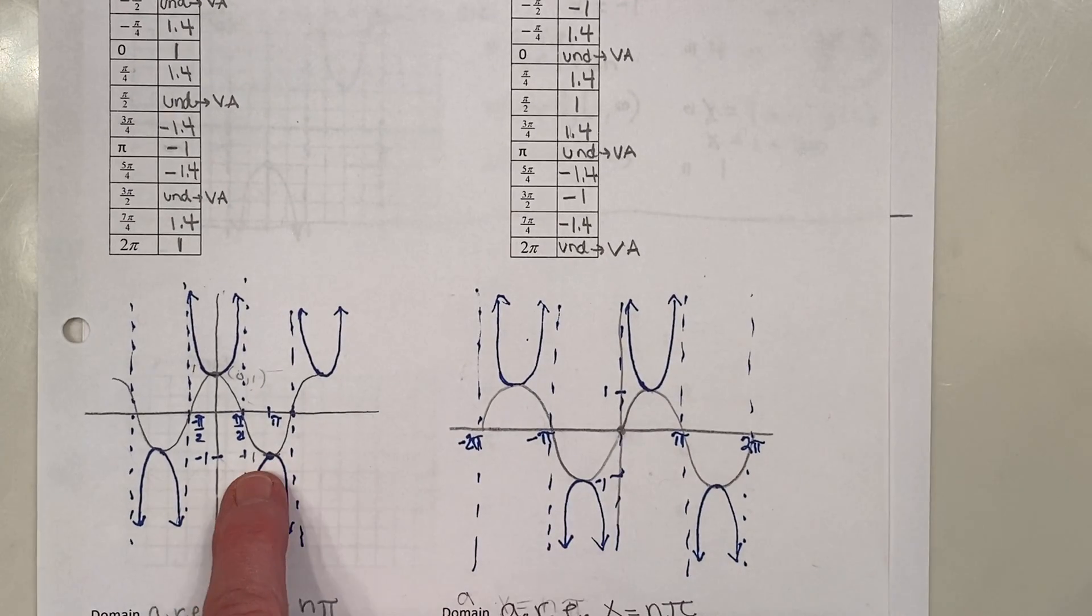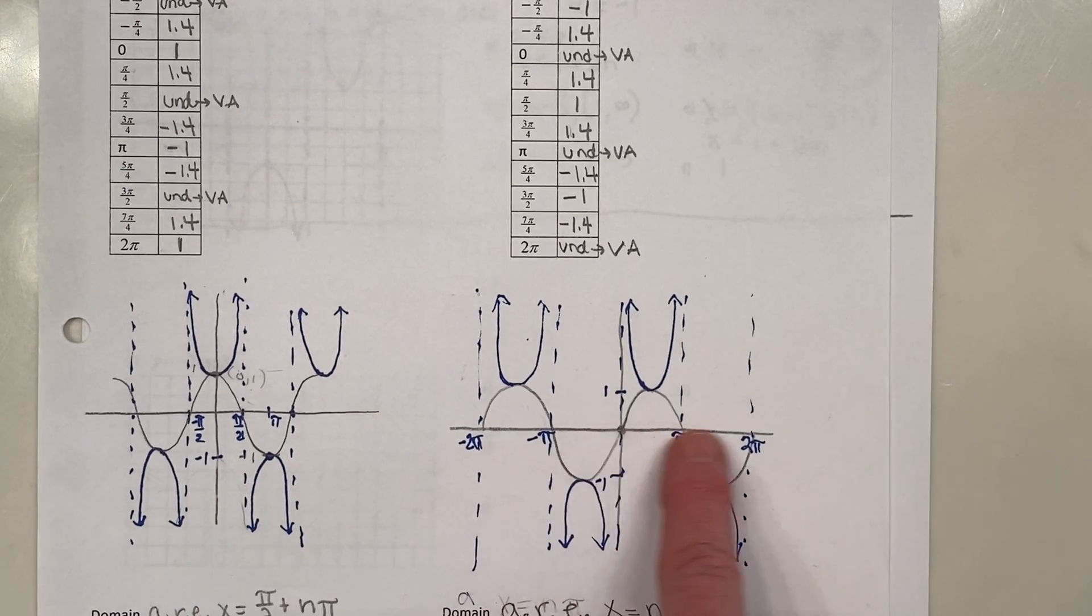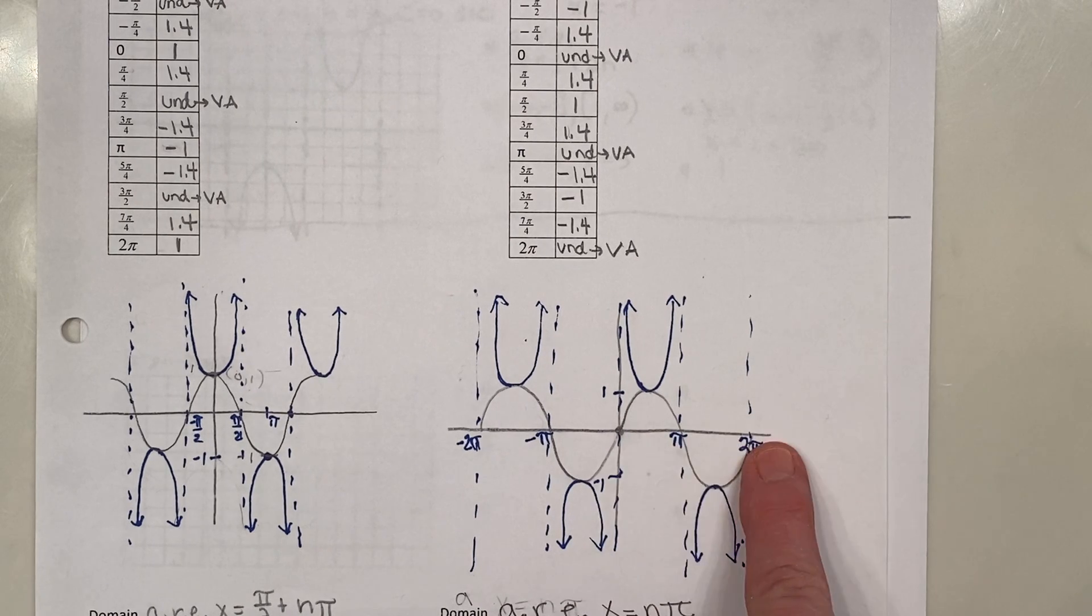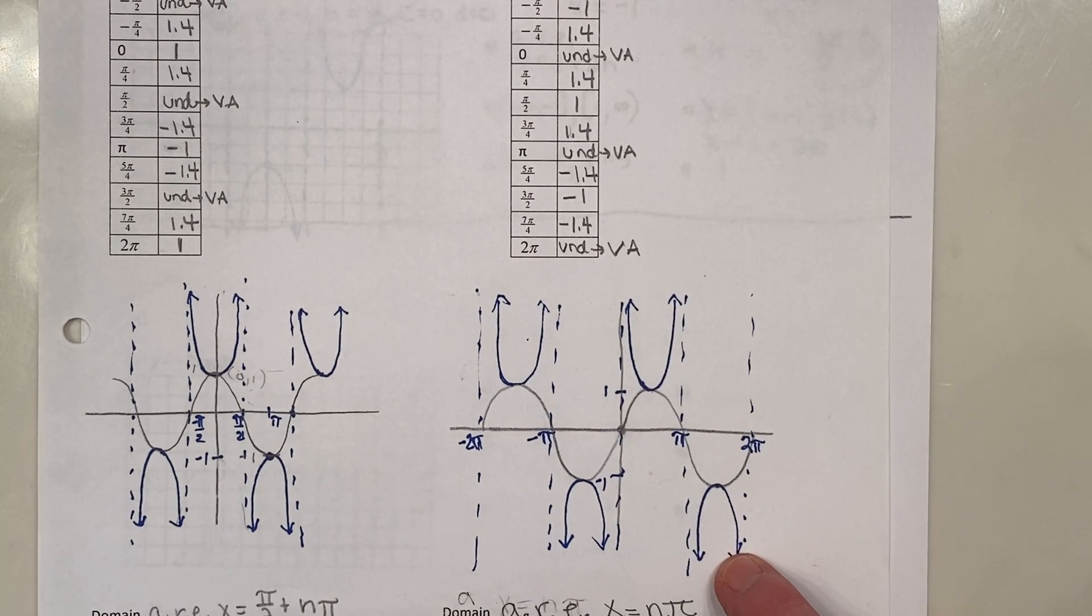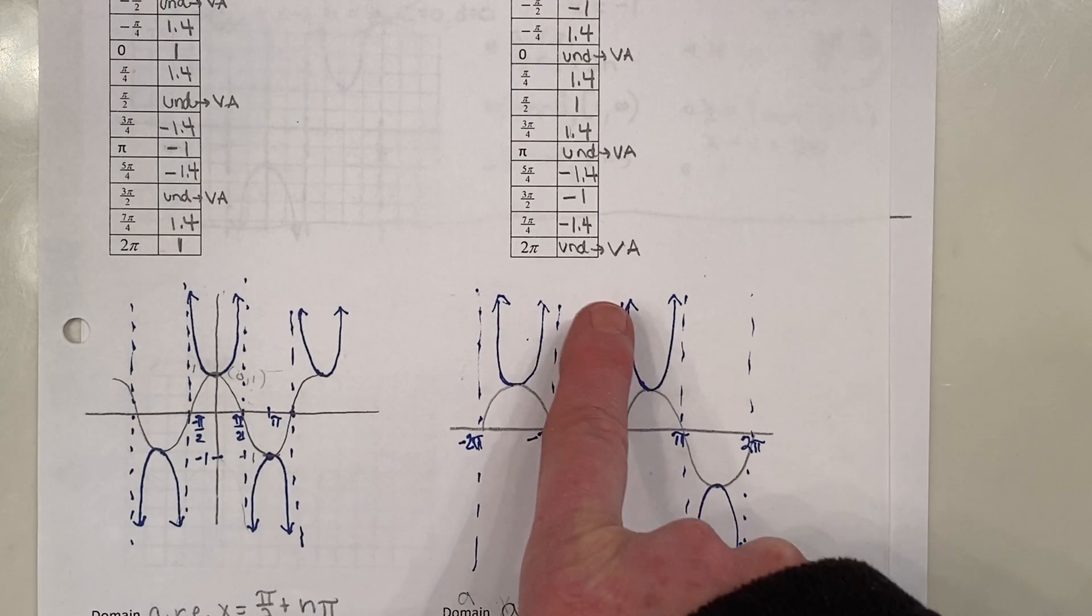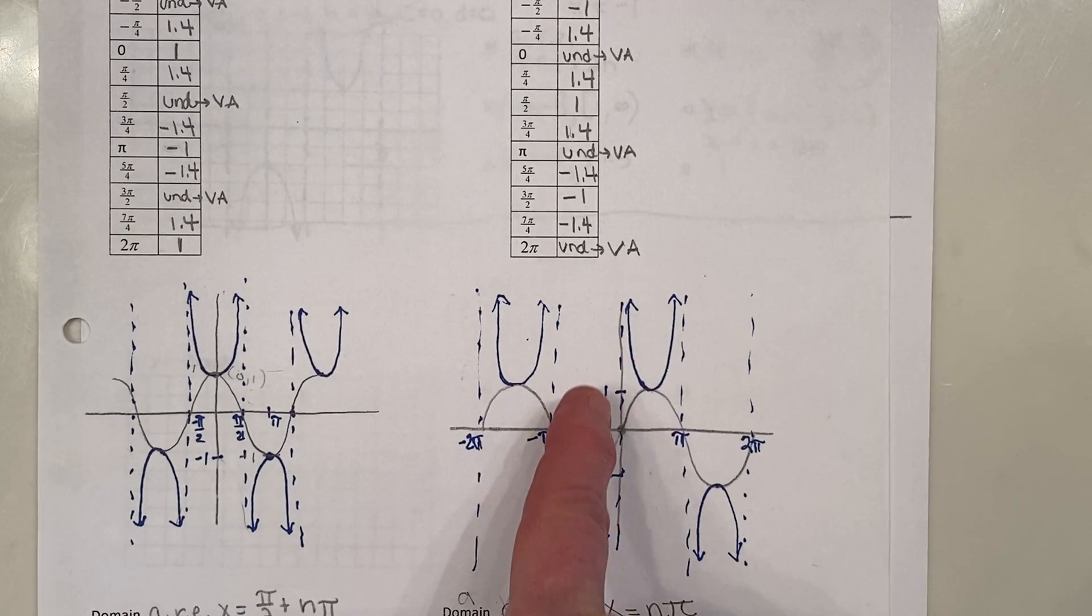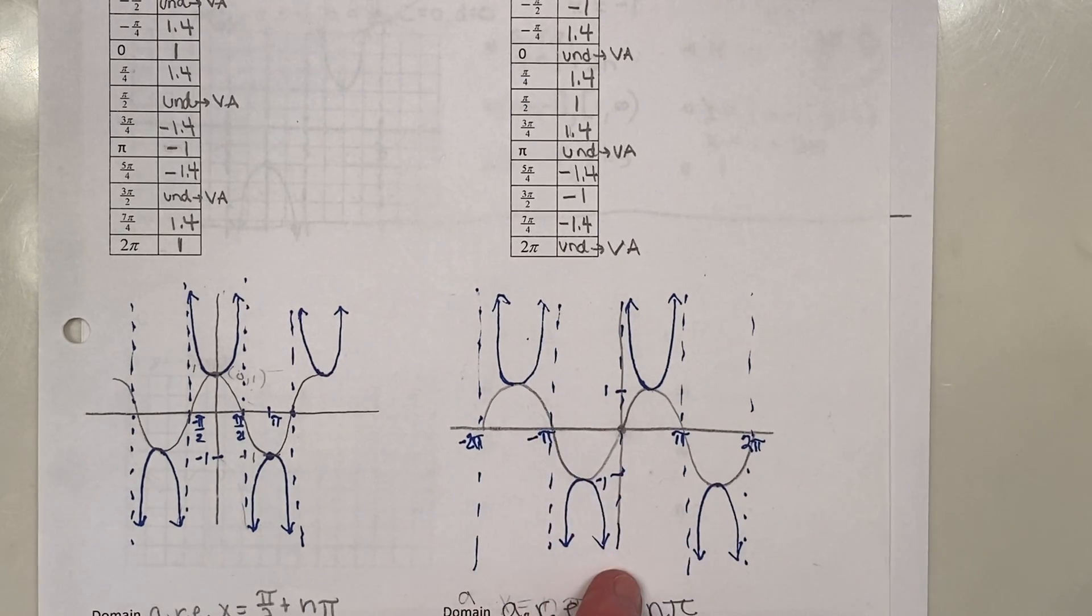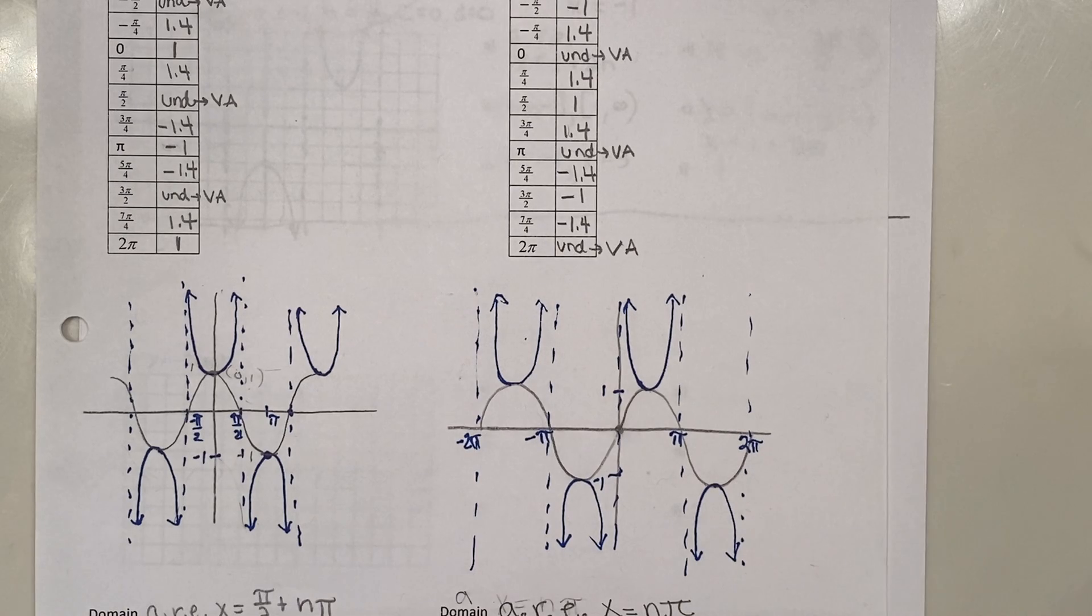So for cosecant, it does look similar to secant. The period is 2π. That's the horizontal distance needed to have an up and a downward part of the graph. Notice that for the parent function cosecant, we have a vertical asymptote on the y-axis and then every multiple π after that.